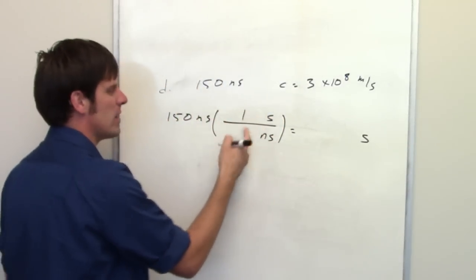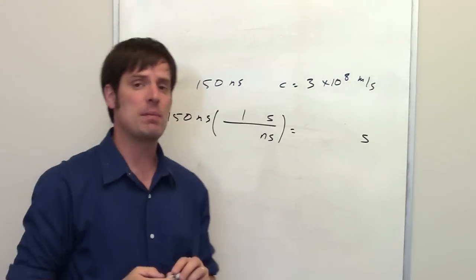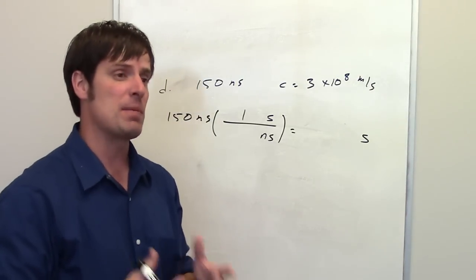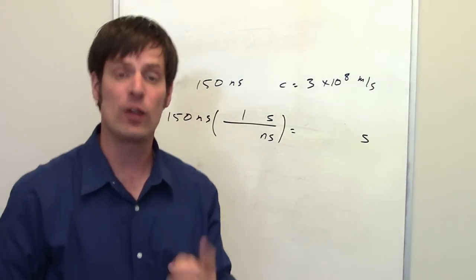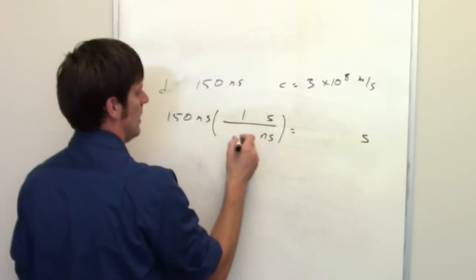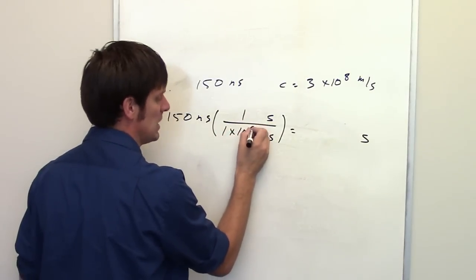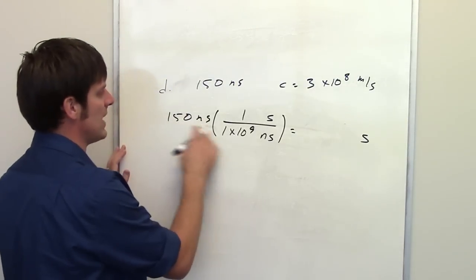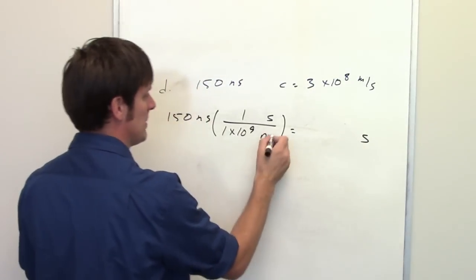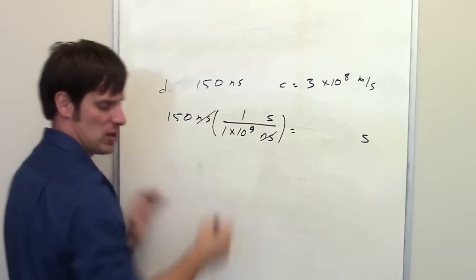So, I'm going to put seconds in the numerator. How many nanoseconds are there in one second? Well, I remember that nano is associated with the number 9 because both of them start with the letter N. So, one second happens to be 1 times 10 to the ninth nanoseconds. So, 150 nanoseconds divided by this number is going to give me my seconds because my nanoseconds cancel each other out.